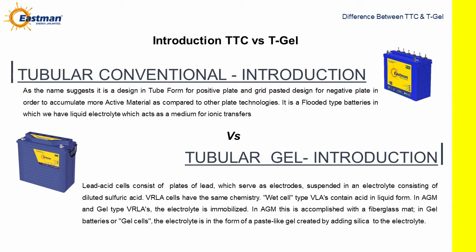Tubular Gel. Lead acid cells consist of plates of lead, which serve as electrodes, suspended in an electrolyte consisting of diluted sulfuric acid. VRLA cells have the same chemistry. Wet cell type VLAs contain acid in liquid form. In AGM and gel type VRLAs, the electrolyte is immobilized. In an AGM, this is accomplished with a fiberglass mat. In gel batteries or gel cells, the electrolyte is in the form of a paste-like gel created by adding silica to the electrolyte.